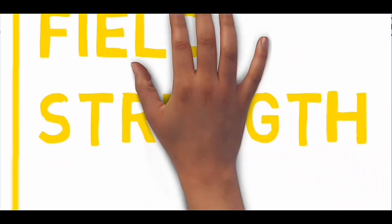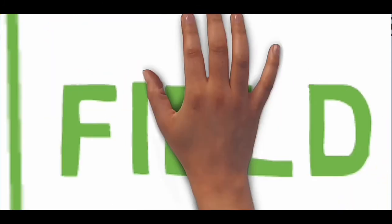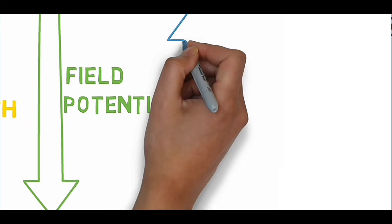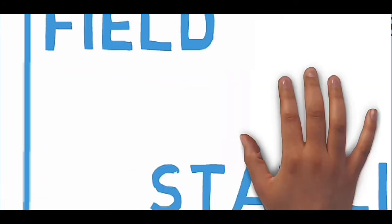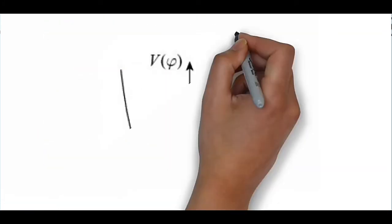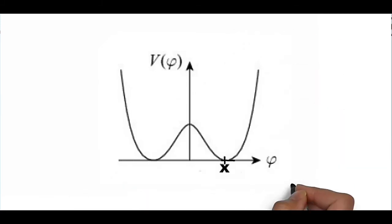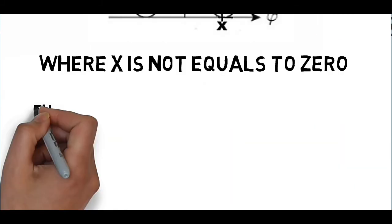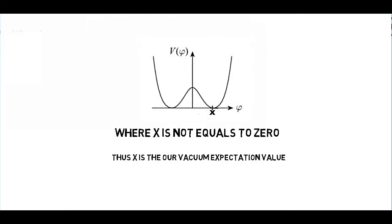Due to this, the field still increases and potential decreases, until the field re-acquires its original configuration with its potential to be lowest. Since this minimum potential is attained at some value which is not equal to zero, thus we say that the Higgs field has non-zero expectation value in vacuum.